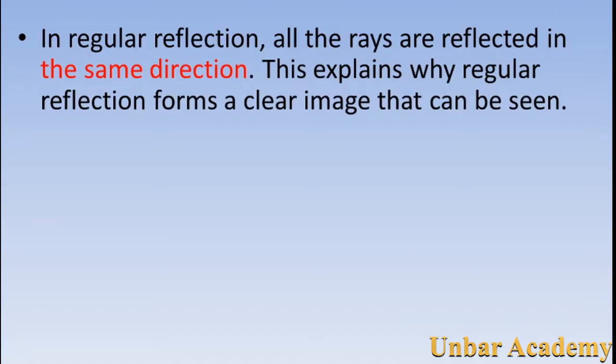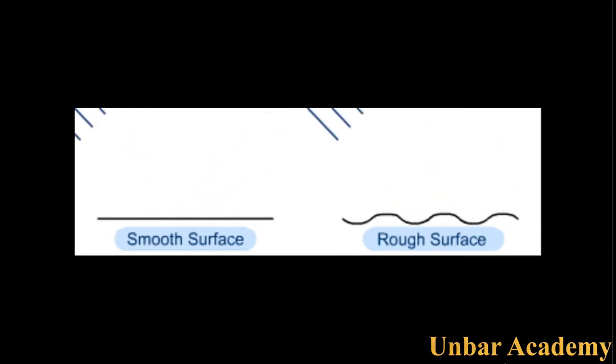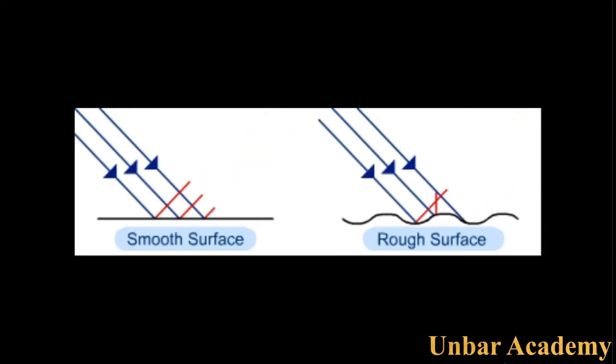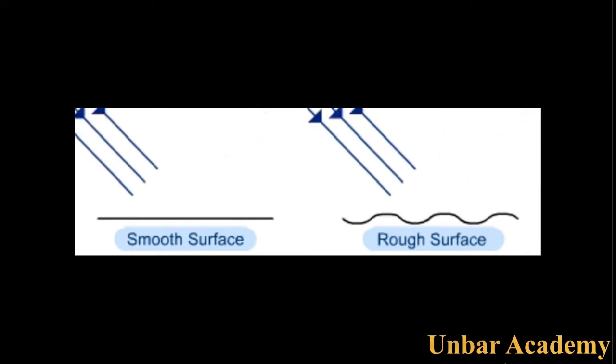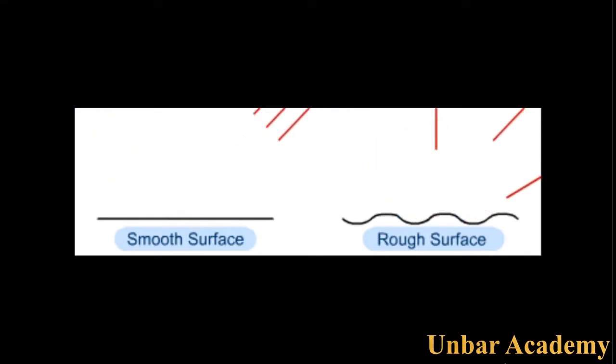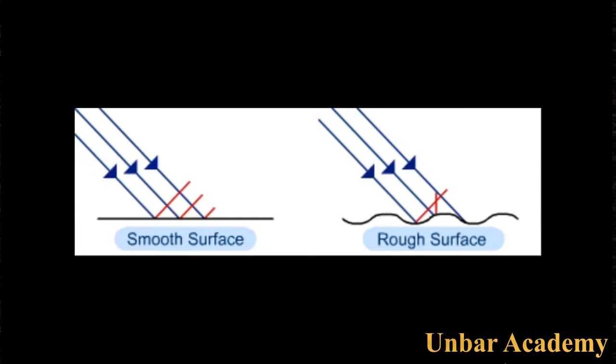In diffused reflection, the rays are reflected in many different directions. This is why diffused reflection forms a blurry image or no image at all.